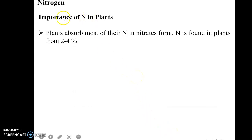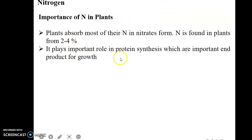If we talk about the importance of nitrogen within plants, plants absorb most nitrogen in nitrate form. Nitrogen is found in plants from 2 to 4 percent and plays an important role in protein synthesis, which is very important for plant growth.